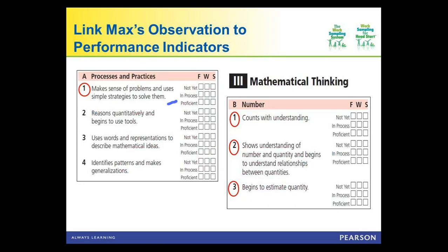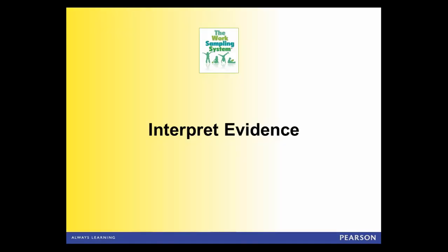This is one observation of one child. You use this observation in conjunction with other pieces of information to draw conclusions about Max's performance of specific indicators. Did he demonstrate counting with understanding? Did he show understanding of number and quantity? Was he beginning to estimate quantities? You interpret evidence routinely — while interacting with a child, on a daily or weekly basis — at different points along the assessment cycle.